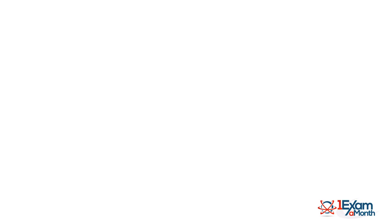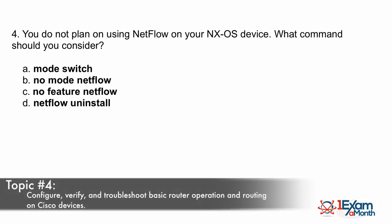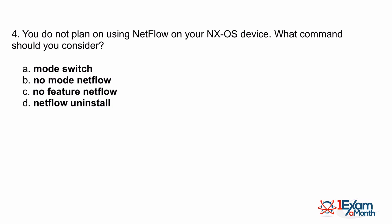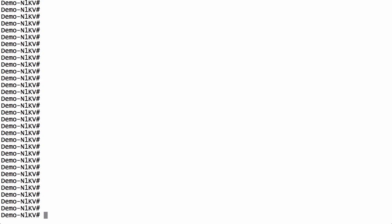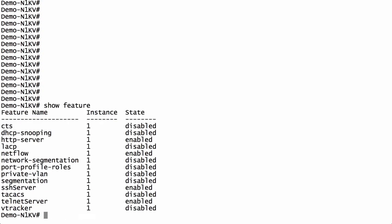Our final topic area on the 640-911 exam is configure, verify, and troubleshoot basic router operation and routing on Cisco devices. These could be Cisco Nexus switches, since some Nexus switches can act as multilayer switches and do routing. The question states: you do not plan on using NetFlow on your NXOS device — that's the Nexus operating system. What command should you consider? To help answer this, let's look at what features are running on a Cisco Nexus switch by issuing the command 'show feature,' which displays various features and their enabled or disabled state.